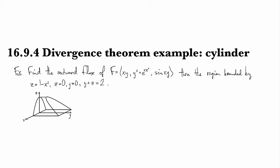In this clip, we're going to look at the example of a parabolic cylinder — a solid cylindrical chunk — and we're going to use the divergence theorem again to simplify finding the outward flux of a vector field.